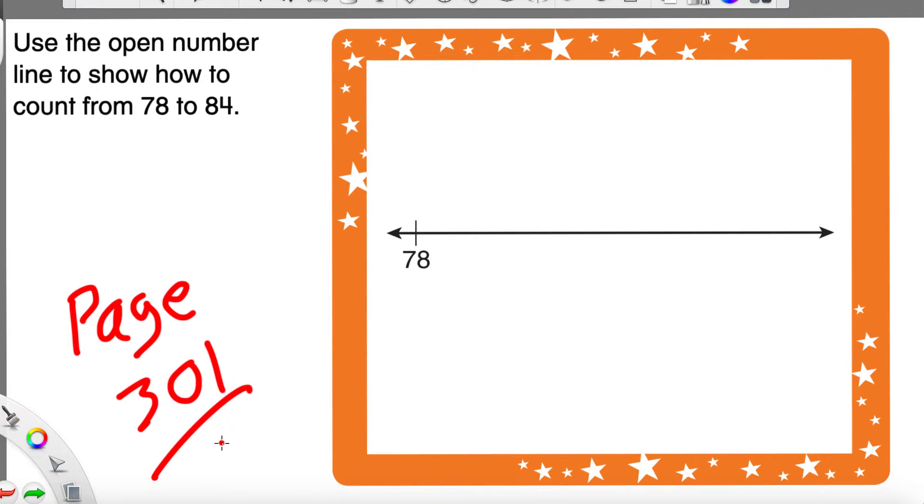If you are still playing the video, I'm going to assume you are ready to go. So I'm going to clear my page here, and let's see what they want us to do. It says, use the open number line to show how to count from 78 all the way to 84.